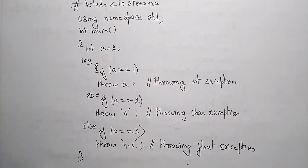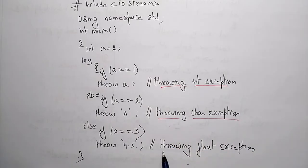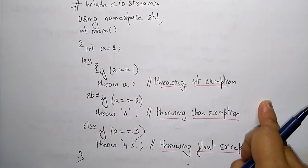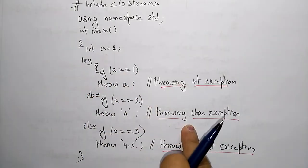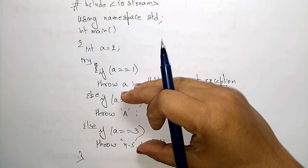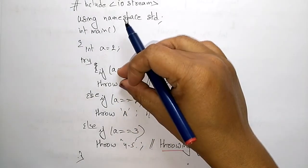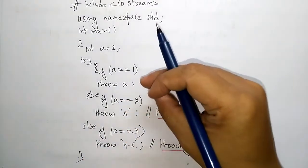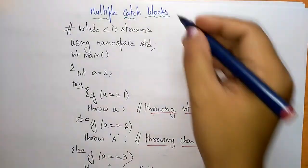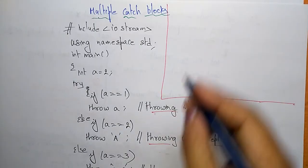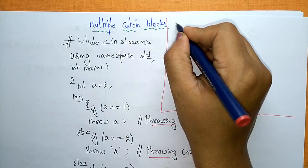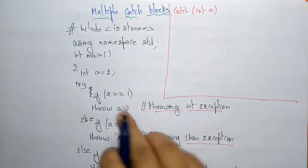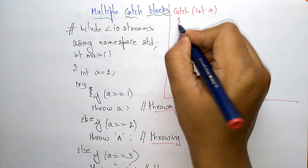In this try block I have written three statements: one throwing an integer exception, one throwing a character exception, and one throwing a float exception. Each will be caught by a separate catch block. Now I write the catch blocks. First: catch(int a) — it prints cout 'integer exception'.